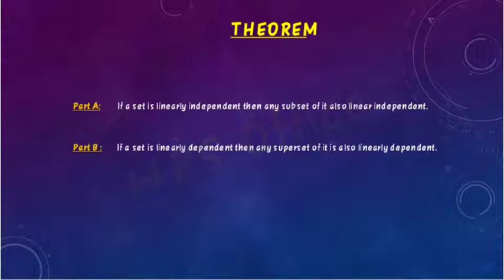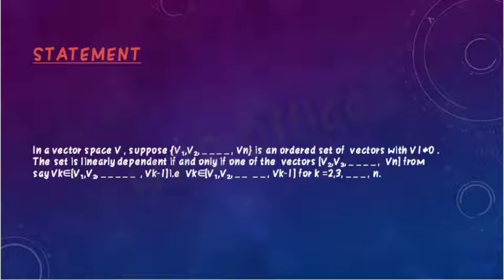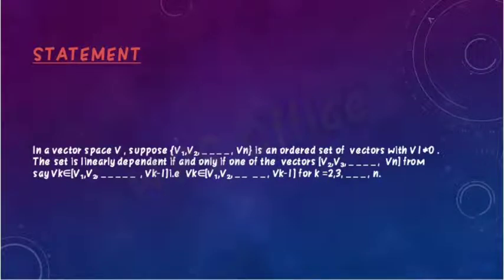Statement: In a vector space V, suppose {V1, V2, ..., Vn} is an ordered set of vectors with V1 not equal to 0. The set is linearly dependent if and only if one of the vectors in {V2, V3, ..., Vn}, say Vk, belongs to the span of {V1, V2, ..., Vk minus 1}, for k equal to 2, 3, ..., n.